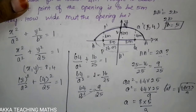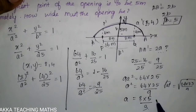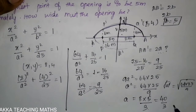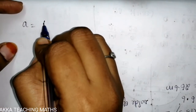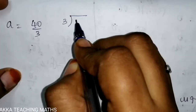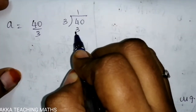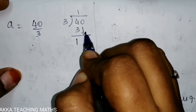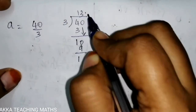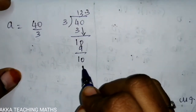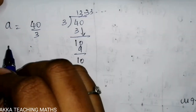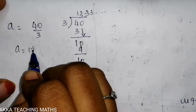So a² = 64 × 25 divided by 9. Taking the square root, a = 40 divided by 3. Dividing 40 by 3 gives 13.33. So the value of a is approximately 13.33 meters.